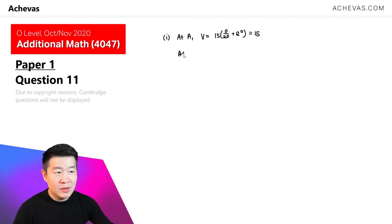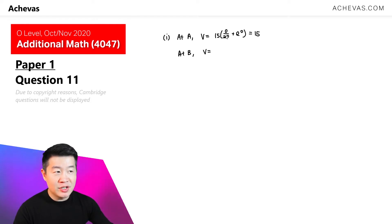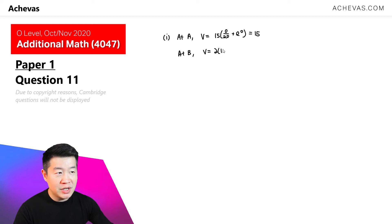We can now deduce the speed at B, because the speed at B is just going to be 2 times the speed at A, so it's going to be 2 times 15. So at B, the speed is 30.